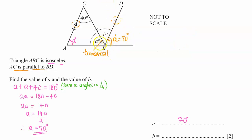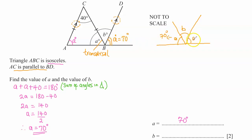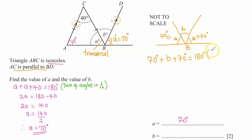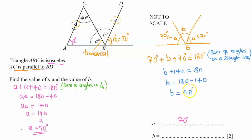We can see that the angle at B has been partitioned into three parts: the angle on the left is A (70 degrees), B is unknown, and the angle on the right is also A (70 degrees). All three angles lie on a straight line, and since the sum of angles on a straight line is 180 degrees, we have: 70 plus B plus 70 equals 180. That gives B plus 140 equals 180, so B equals 40 degrees.